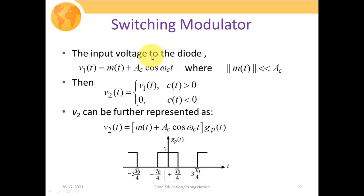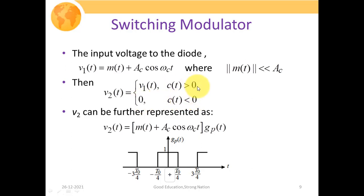The input voltage to the diode is V1(T) = M(T) + AC·cos(omega-C·T). We assume M(T) is much less than AC — that is, the peak amplitude of the message signal is much less than the peak amplitude of the carrier signal. Therefore V2 = V1(T) when the carrier is greater than zero (diode conducting), and V2 = 0 when the carrier is less than zero (diode non-conducting). When forward biased the output is V1(T); when reverse biased the output is zero.